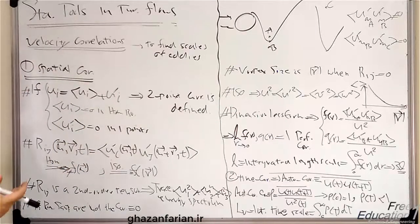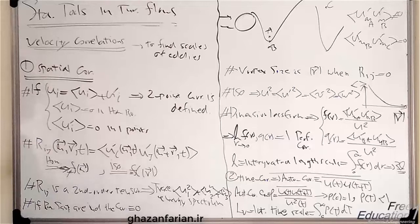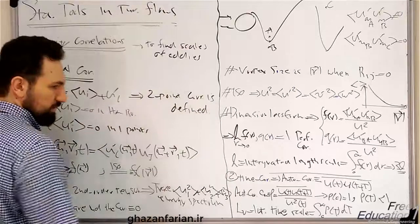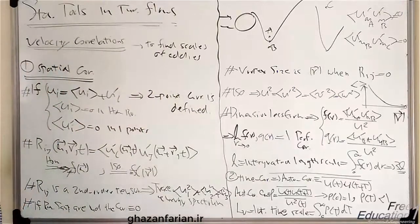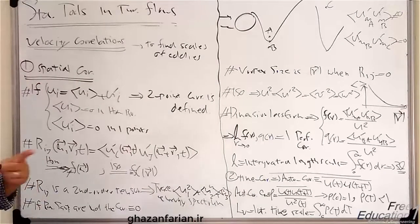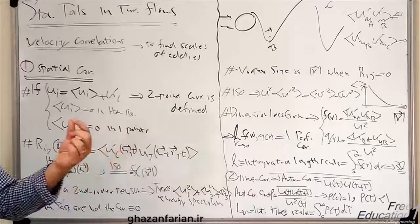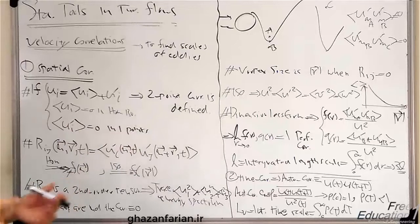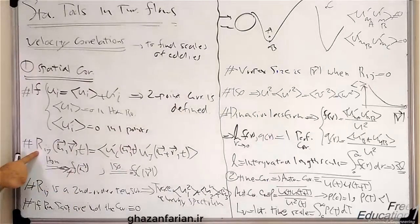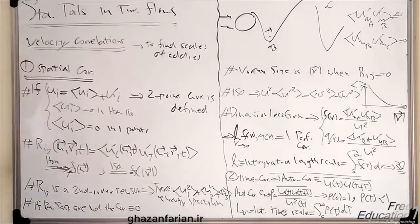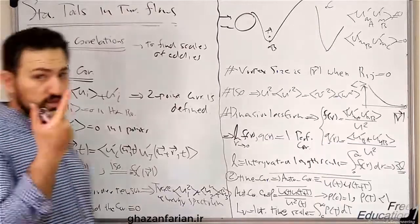So we try to present a two-point correlation. The two-point correlation, as it's obvious from the title, is engaged with the fluctuations of the velocities in two distinct points. So we have three velocities in x, y, z, in three-dimensional space.